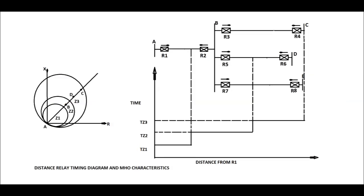The timing diagram for relay R1 has been shown in this figure. The characteristics of Zone 1, Zone 2, and Zone 3 are shown in the R-X diagram. This is called the mho characteristics of the distance relay.